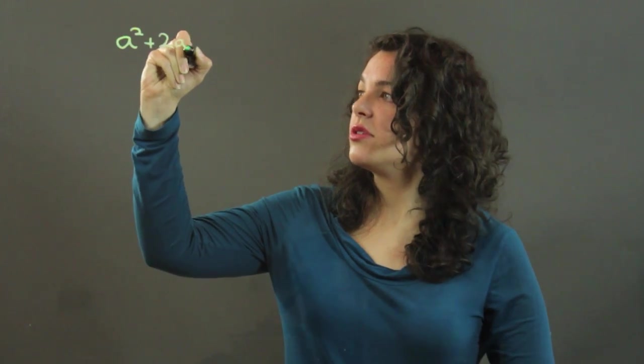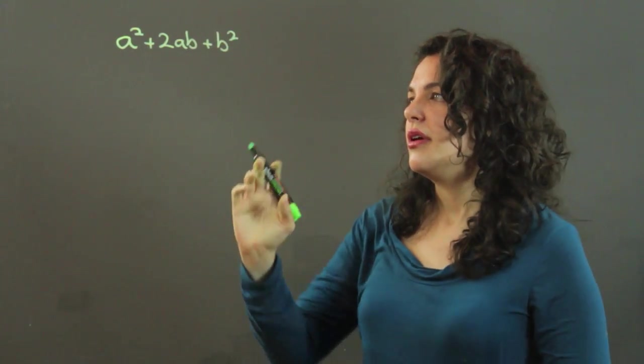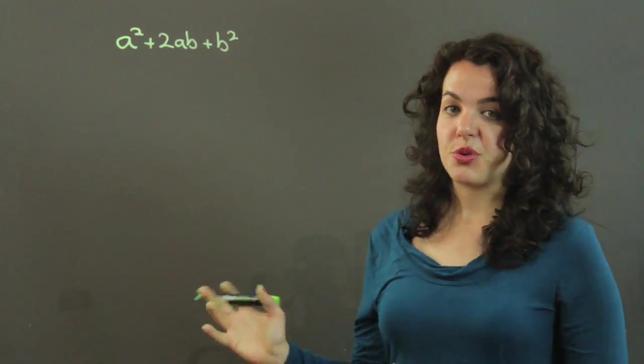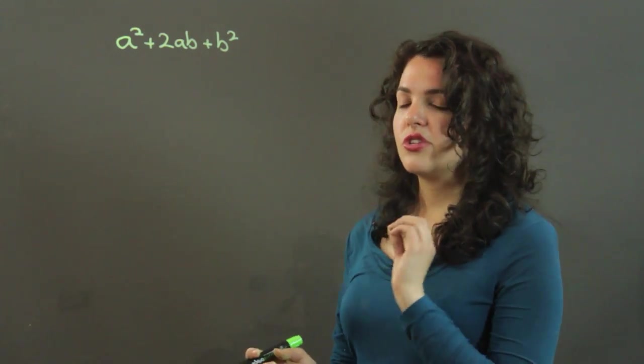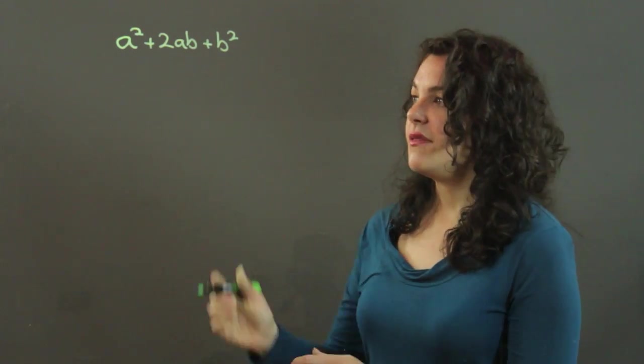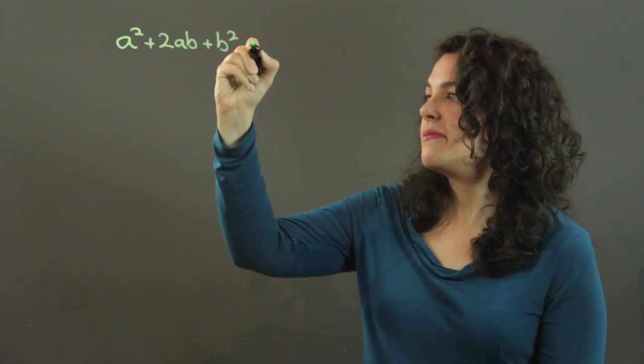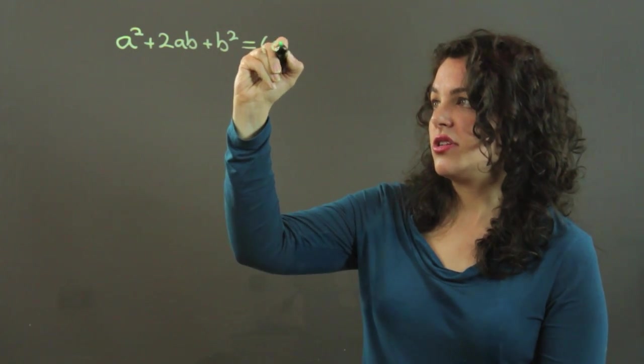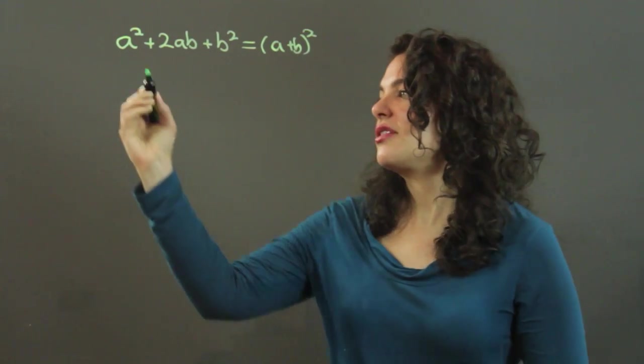So let's look at the basic form. You'd have something like a squared plus 2ab plus b squared is the form of a perfect square trinomial. And the reason we pay attention to them is they're so easy to factor. If you can see this form in one of your trinomials, you can immediately factor it to simply a plus b all squared. So it's super easy to factor.